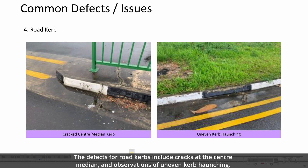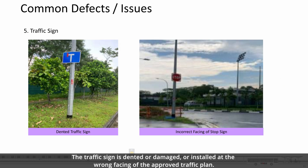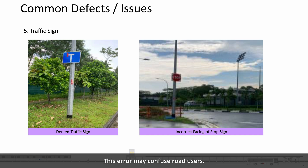The defects for road curbs include cracks at the centre median and uneven curb haunching. Traffic signs are observed to be dented, damaged, or installed at the wrong facing relative to the approved traffic plan. This error may confuse road users.